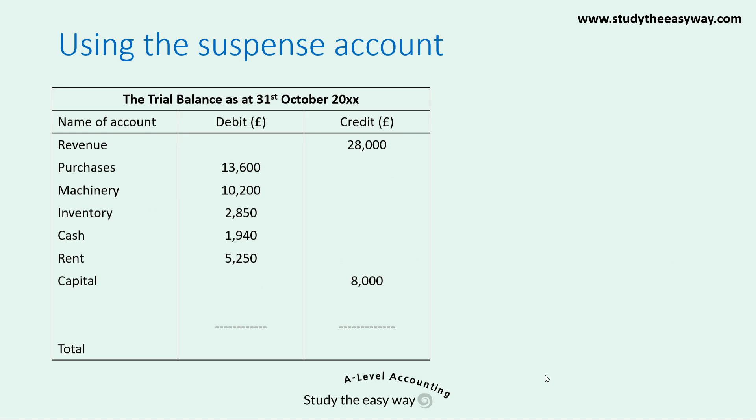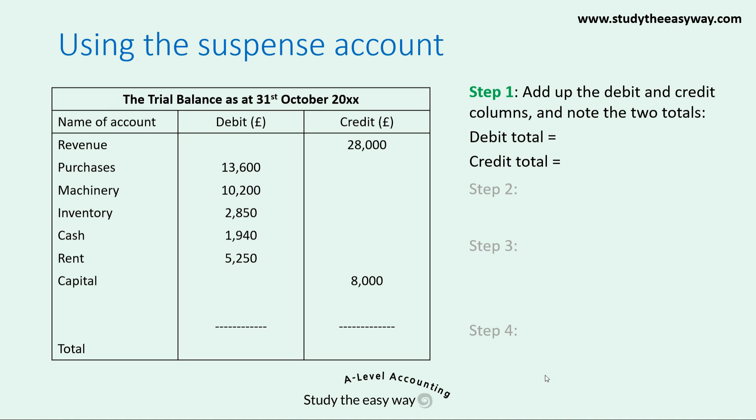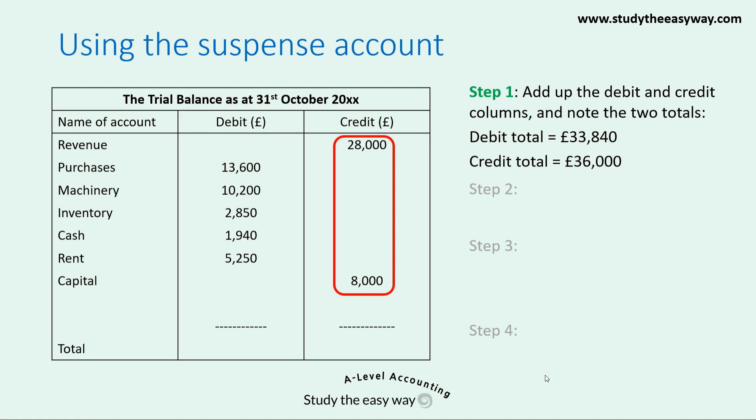Let's discuss now how to use the suspense account using an example. I've drawn here a trial balance on the left hand side of the screen. If you add up the two columns you'll see that the totals are different and that's why we're going to need a suspense account. In step one we add up the debit and credit columns and note the two totals. Adding up the figures in the debit column gives a total of £33,840 and adding up the amounts in the credit column gives a total of £36,000.